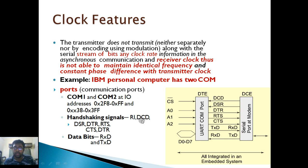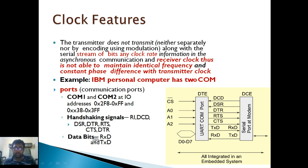The handshaking signals are RI, DCD, and DSR — we have already discussed all these in the previous lecture. RXD and TXD are the receiver-end bit and transmitter-end bit; these are the data bits. The handshaking signals are DCD, DSR, DTR, RTS, and CTS.